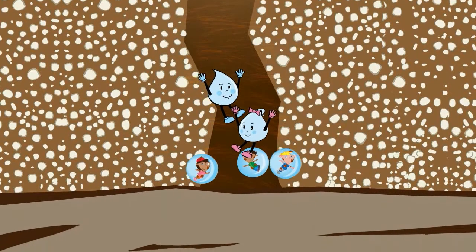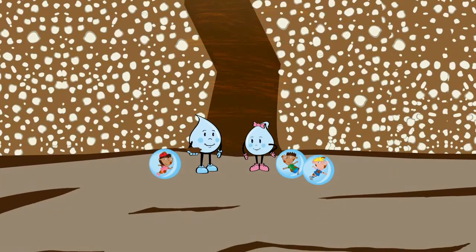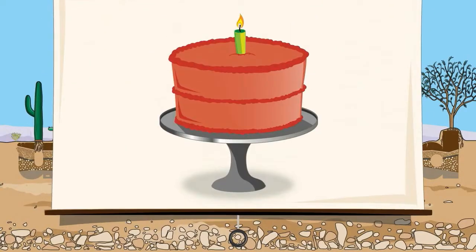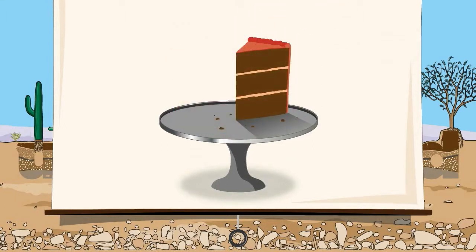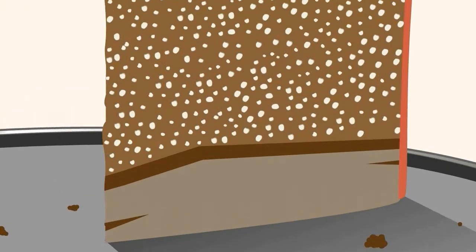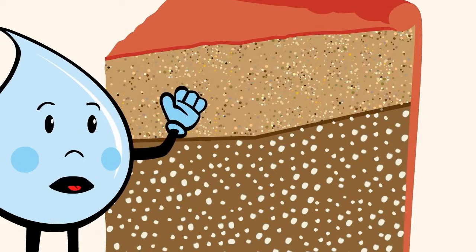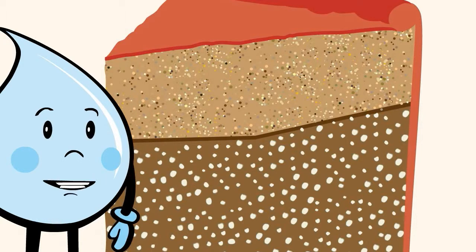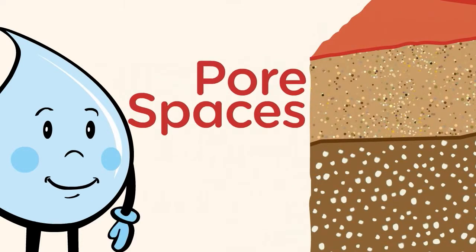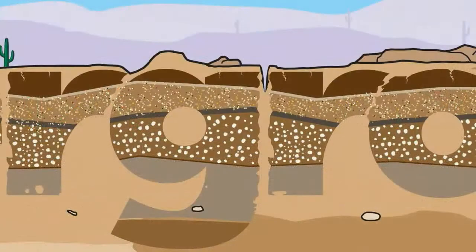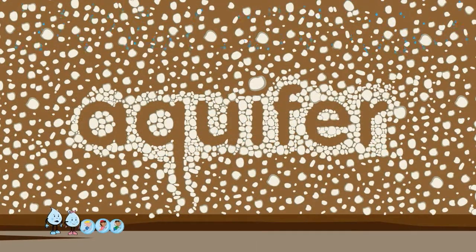We are underground! Imagine a giant cake — when you slice into it you see all the different layers. It's the same with the earth: some of the underground layers are thick, some are thin, some are rocky and others sandy. In some places underground there is enough space between the rocks and sand to hold water — these tiny places are called pore spaces.